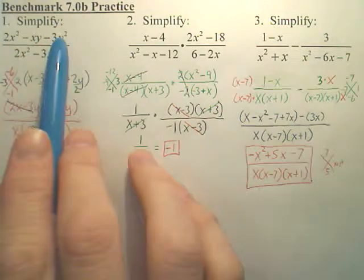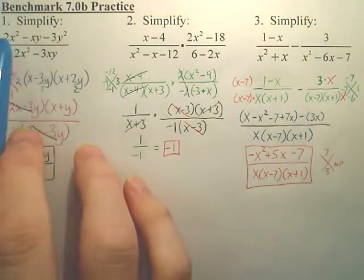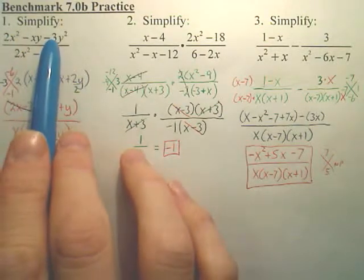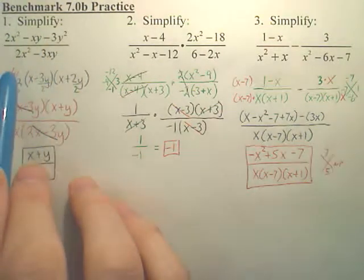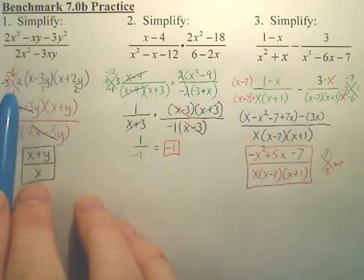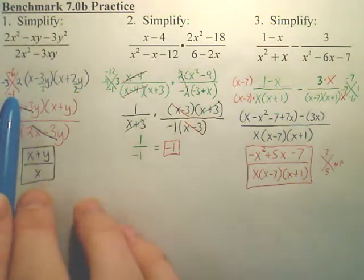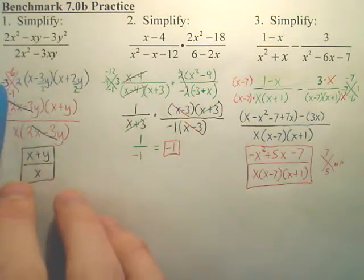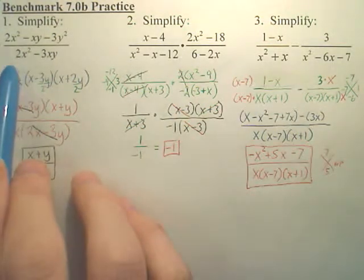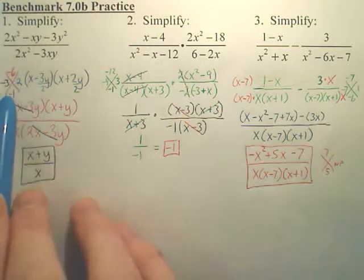Well, the top is a factoring where you have to multiply the front coefficient by the last coefficient, and that gives you negative 6, and then negative 1 goes on the bottom. And when you think of two things that multiply to get negative 6 and add to get negative 1, what you'll get is negative 3 times 2 is negative 6, and negative 3 plus 2 is negative 1.